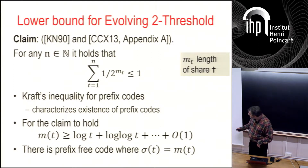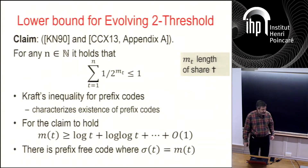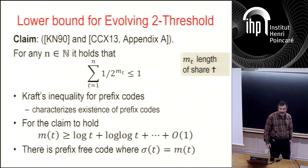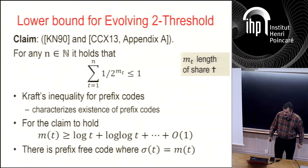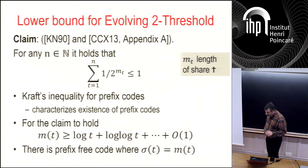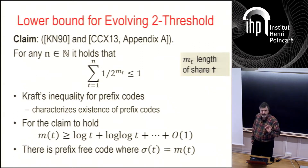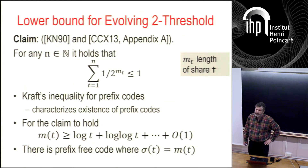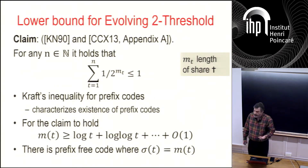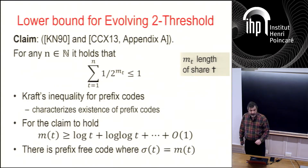This means the problem is a little harder than in the bounded case. With an upper bound it's more like log t, but without an upper bound you need log t + log log t + ..., a little extra.